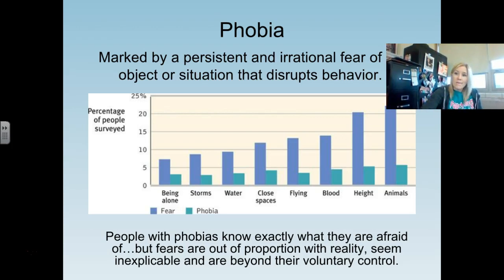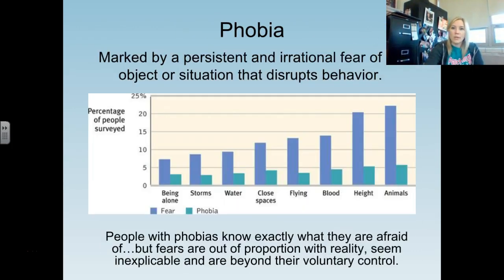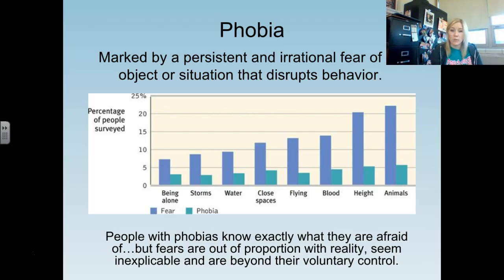A phobia is marked by a persistent, irrational fear of an object that disrupts behavior. It's not just being startled by a spider — a former student with arachnophobia would faint and lose consciousness when she saw spiders. People with phobias know what they're afraid of, know their fear is out of proportion with reality, and also know it's beyond their voluntary control.